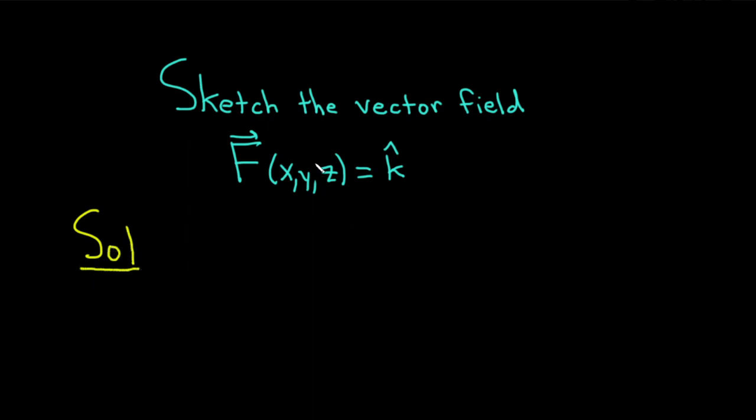So recall that a vector field is basically a function that takes an ordered triple, in this case xyz, and sends it to the vector k-hat. So here k-hat is one of the unit vectors. It's the vector whose components are (0, 0, 1).